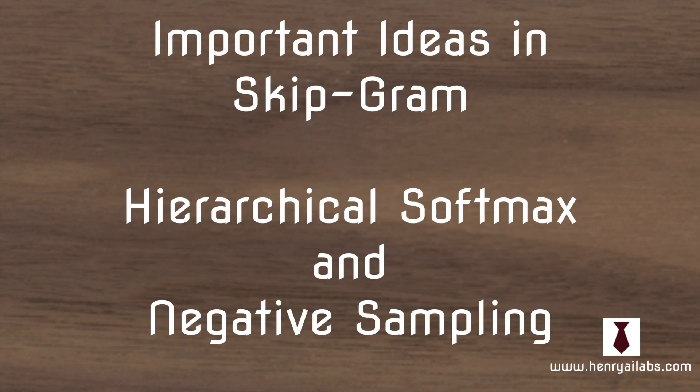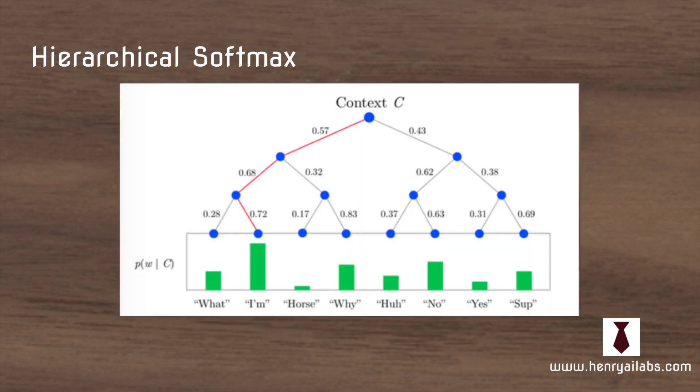So some of the important ideas in skipgram are hierarchical softmax and negative sampling. Hierarchical softmax is a really clever way of reducing the number of hidden units you need in your softmax output layer.